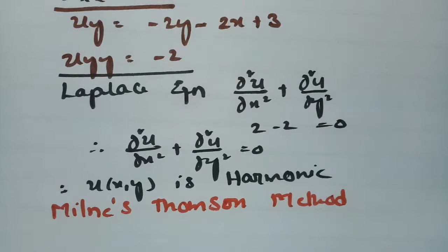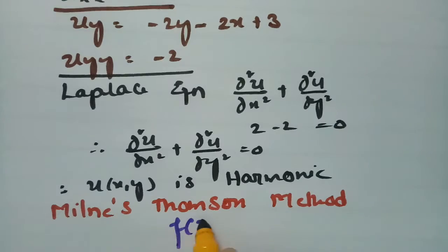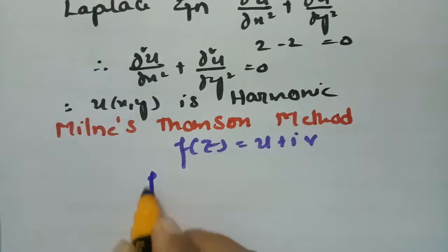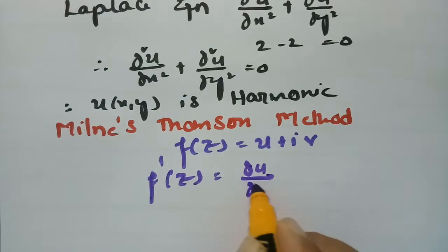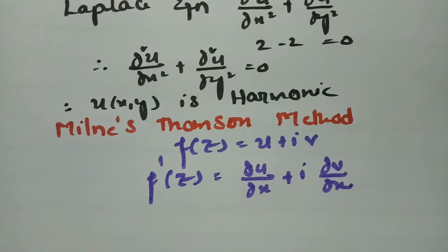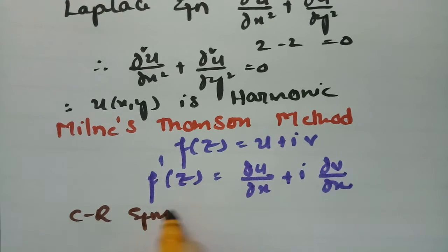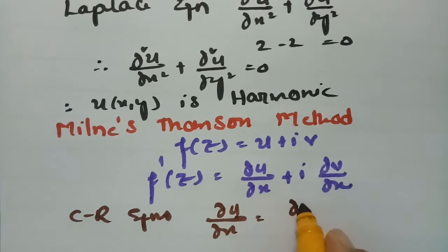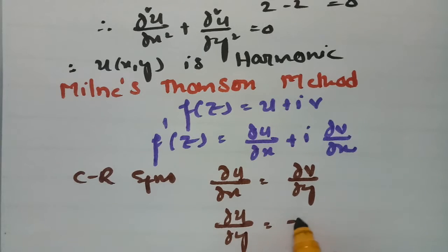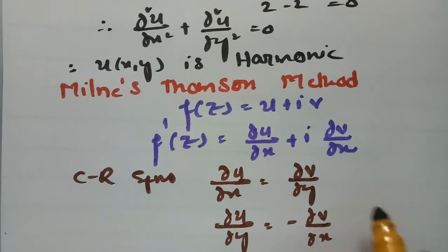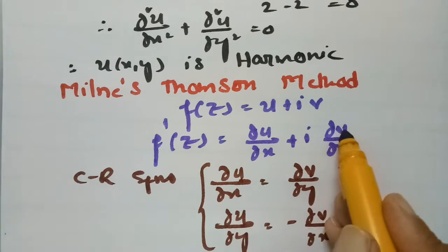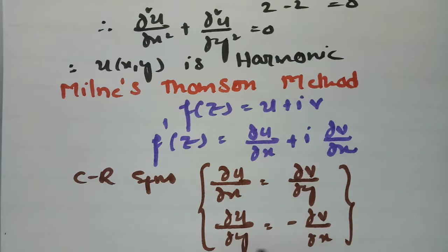According to the Milne-Thomson method, f(z) = u + iv. Differentiating with respect to x: f'(z) = ∂u/∂x + i·∂v/∂x. Using the Cauchy-Riemann equations: ∂u/∂x = ∂v/∂y and ∂u/∂y = -∂v/∂x.